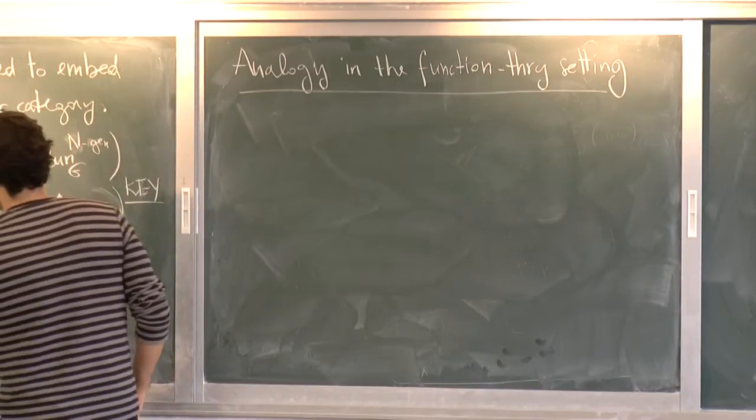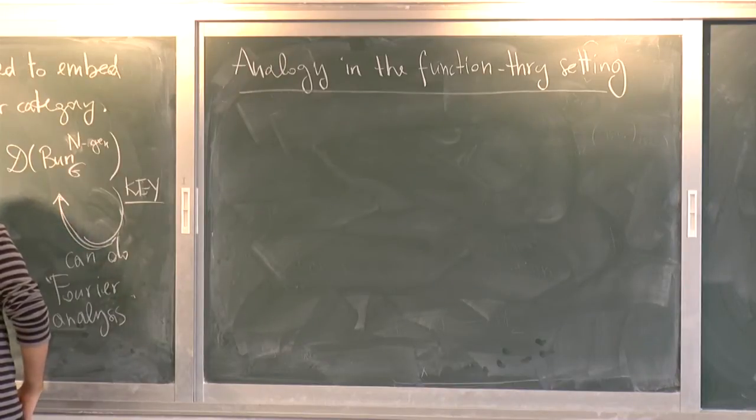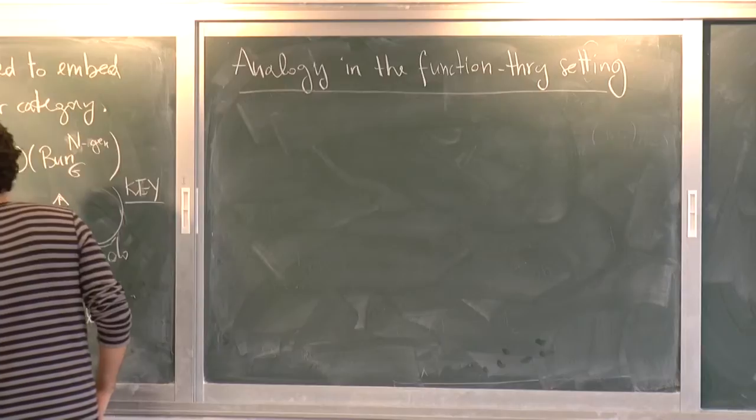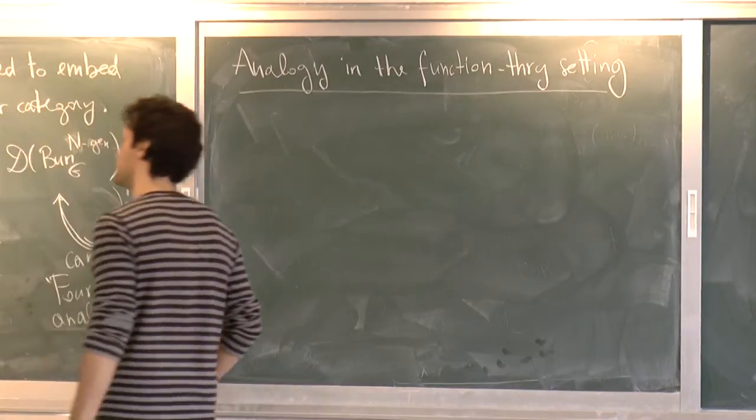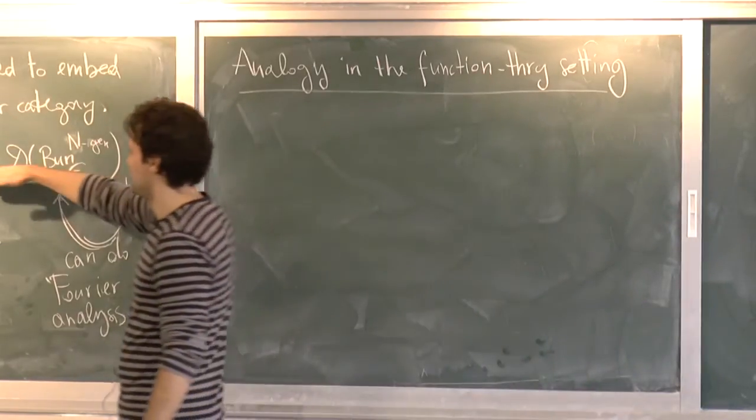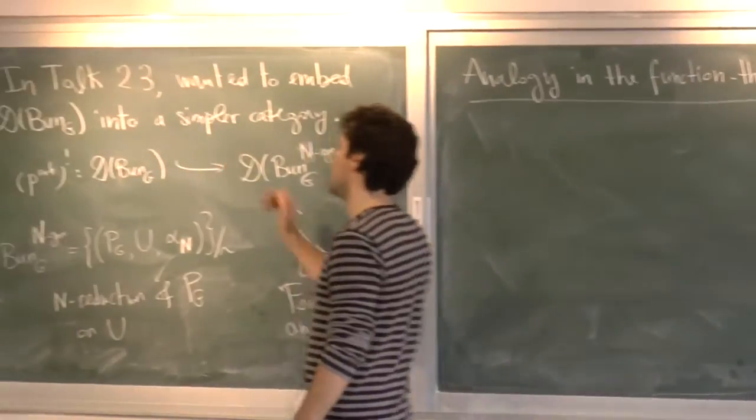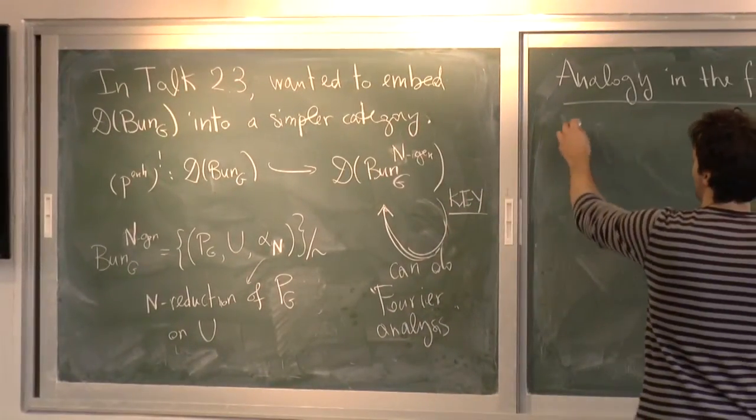So it's just a recap of last time. I rewrite it. Alpha n is a reduction, an n reduction, of the G bundle on U. Right. So let's now translate what we've done so far, what we did last time, into function theory. And remember that the recipe was silly.